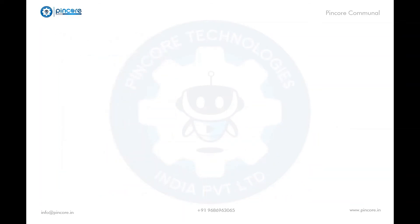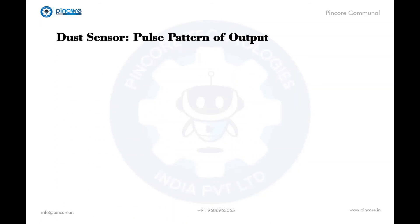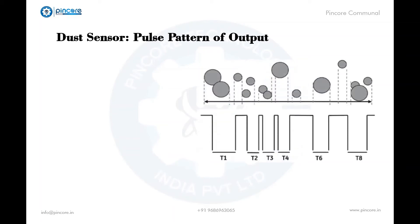Before going into the working principle, it's important to understand the pulse pattern of output. This is the method used by the sensor to distinguish small cigarette smoke from large house dust. As we can observe in the picture, there are narrow and wide pulses, and also overlapped ones. Small cigarette smoke shows narrow or overlapped pulse shapes, while large dust shows wide pulses that are not overlapped. From the width of the pulses, dust can be distinguished.